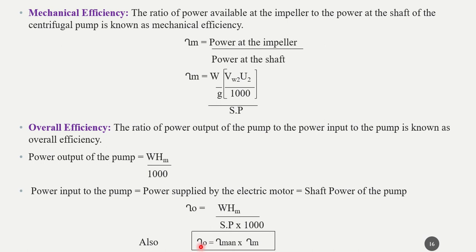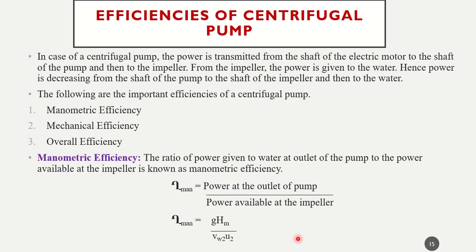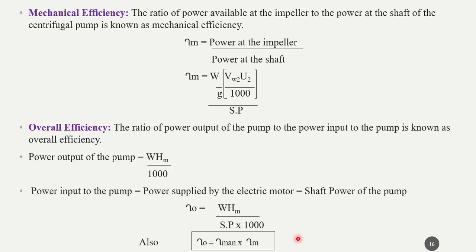To summarize the three efficiencies with reference to the three steps — shaft power, impeller, water delivered: mechanical efficiency relates shaft power to the impeller (power at impeller / shaft power); manometric efficiency relates impeller input to outlet (power out of impeller / power into impeller); overall efficiency relates the full cycle (water delivered / shaft power). Overall efficiency = manometric efficiency × mechanical efficiency.